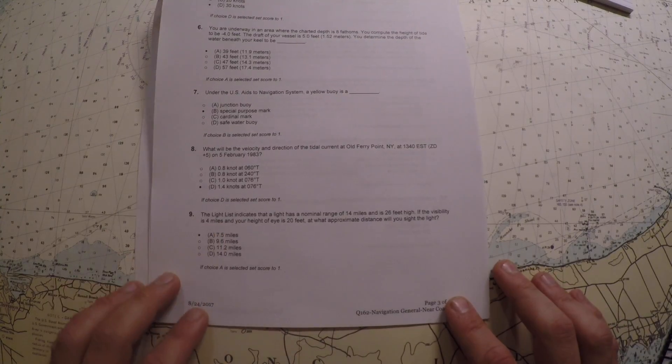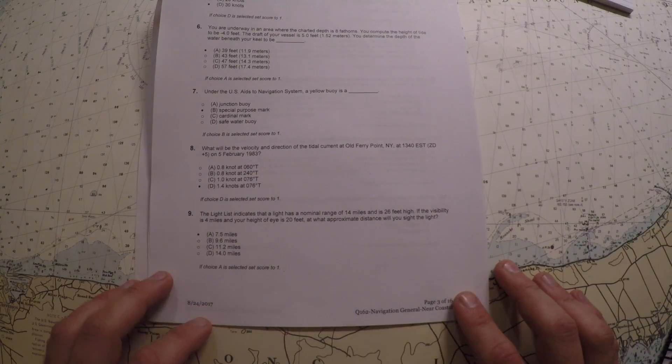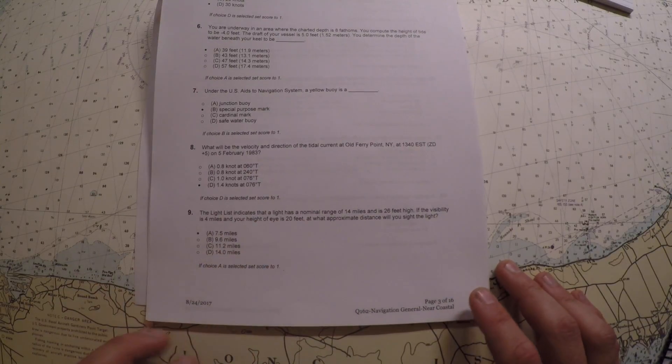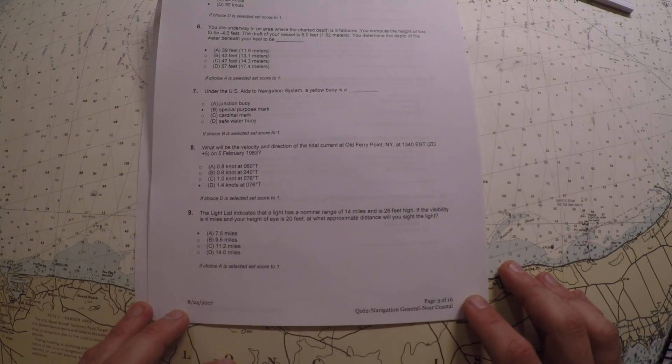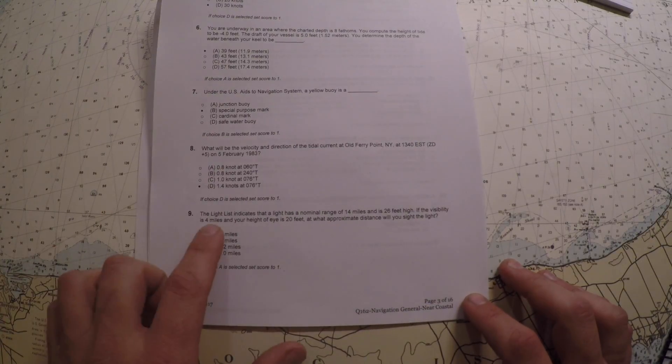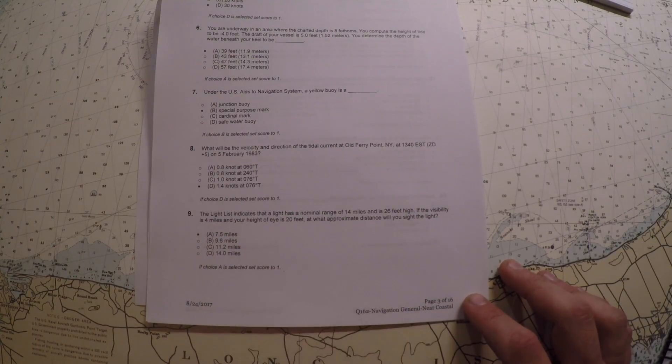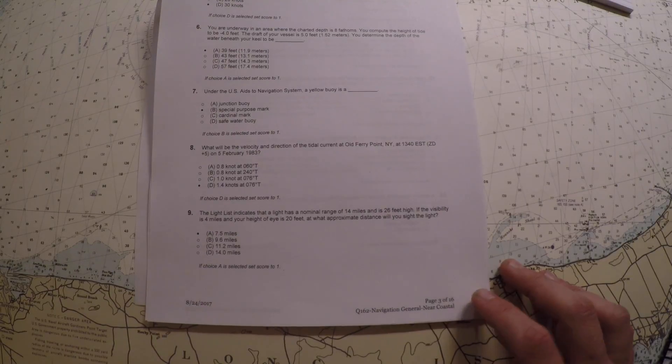For question number nine, we're going to be looking at the light list. It says there's a lighthouse with a nominal range of 14 miles and it's 26 feet high. It gives you the visibility of four miles and your height of eye, and it's asking what range you're going to see this light at.